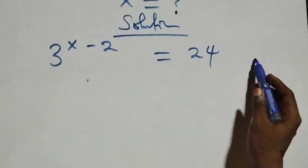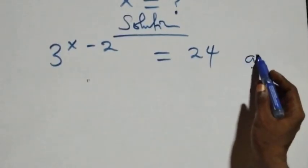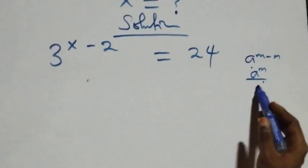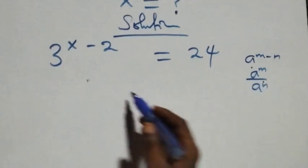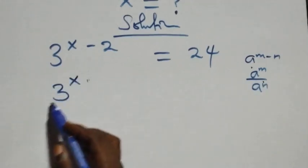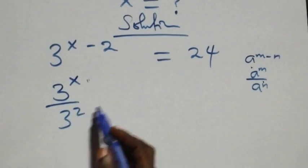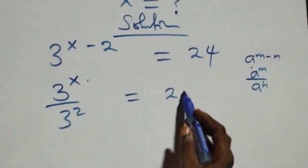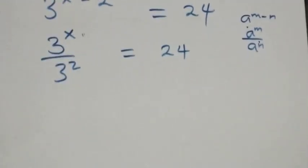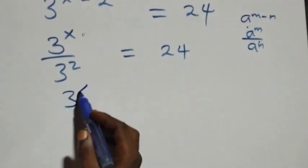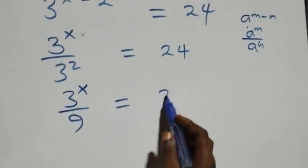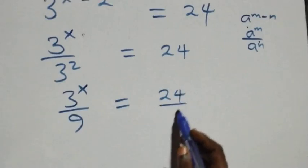This follows from the rule a raised to power n minus m, which is the same thing as a raised to power n over a raised to power m. So here we have three raised to power x over three squared, which equals to twenty-four. The next step: three raised to power x over three squared, and three squared here is nine, equals twenty-four over one.